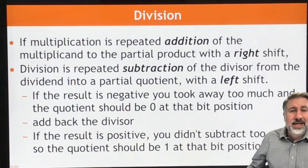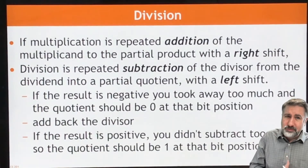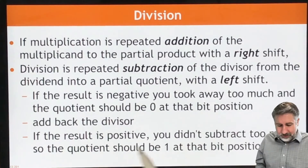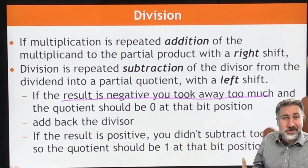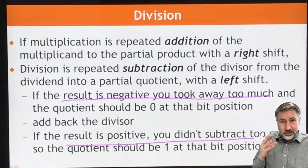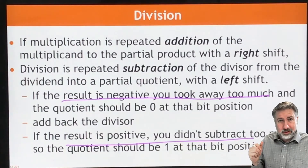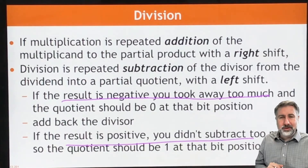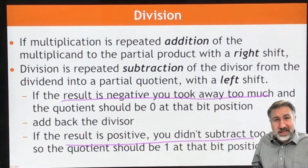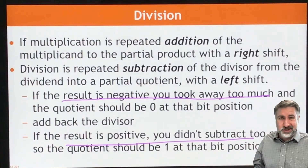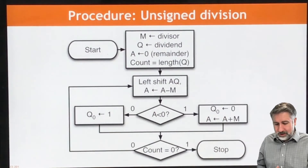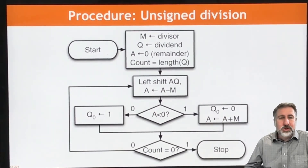Multiplication is repeated addition, so division is repeated subtraction. Instead of shifting to the right, we're going to be shifting to the left. If the result is negative, that means you took away too much and you have to add it back again. If the result is positive, the value fits in the partial remainder and so you put a one in the quotient. If the result was negative, meaning you took away too many, the value doesn't fit in the partial remainder and so you put a zero in the quotient. That's the whole algorithm, and it looks very similar to the process we've been using for multiplication.